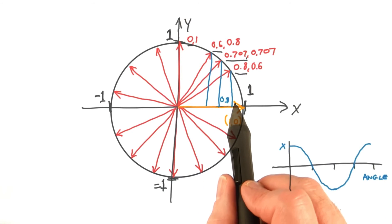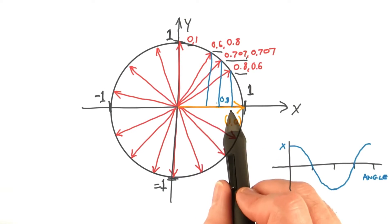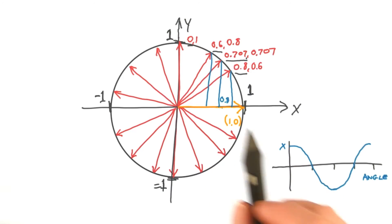If you're still not convinced, what you can do is plot out the various angles and what dot product you get out of them, and you'll see you actually get a cosine curve.